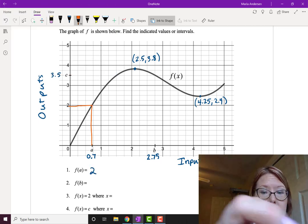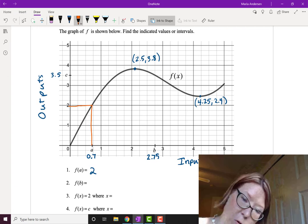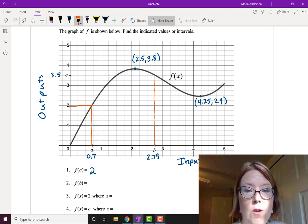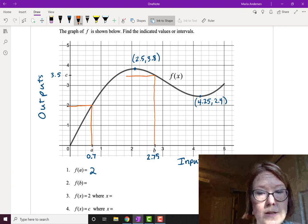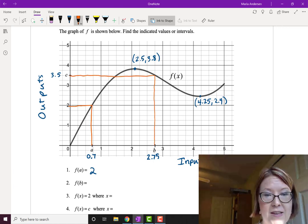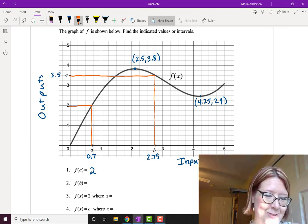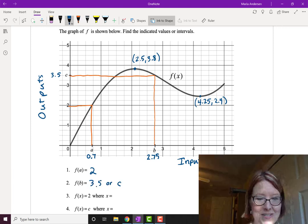f of b. We'll do the same thing. We'll start at b. We'll take a vertical line up to the graph and then over to the x-axis. And we can see that f of b is 3.5, which is also c. So either of those work as an answer.